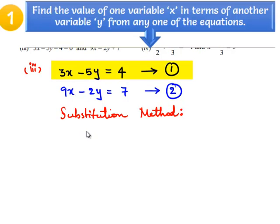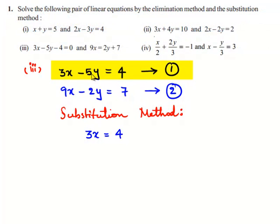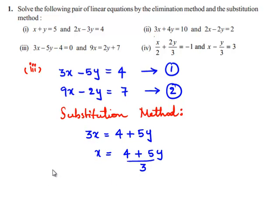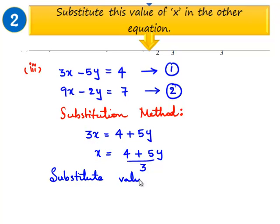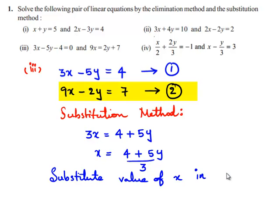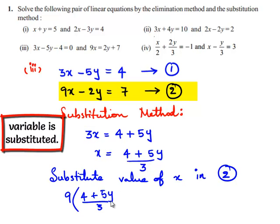From equation 1, 3x equals 4 plus 5y, so x equals 4 plus 5y divided by 3. Now substitute this value of x into equation number 2: 9 times of (4 plus 5y) divided by 3, minus 2y, is equal to 7.